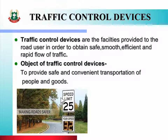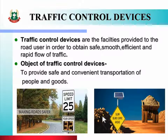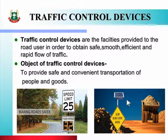Jaise ki aap figure mein dekh rahe ho, yahan pe likha hai speed limit 25 — that is, is road par jo vehicles jaenge unki speed limit 25 km per hour honi chahiye. Second figure hai blind curve ahead — is road side par aage mein curve provide ki hai aur yahan information vehicle user ko de rahe hain. So, these are the traffic control devices provided on the road side.